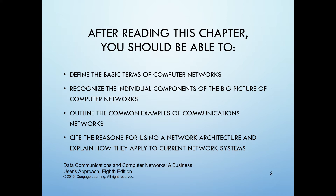The main objectives intended for chapter 1 include: define the basic terms in computer networking and data communications, identify the main elements of a computer network and their functions, outline the common examples of communications networks, and discuss network architectures and how they fit into the current networking system.